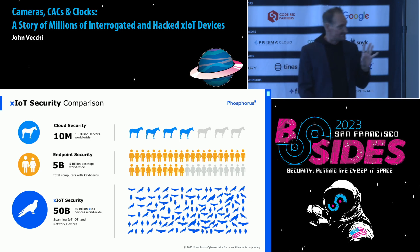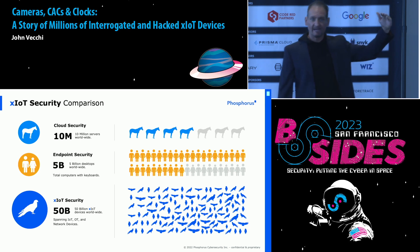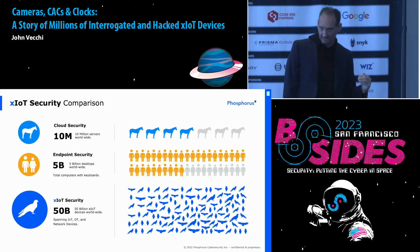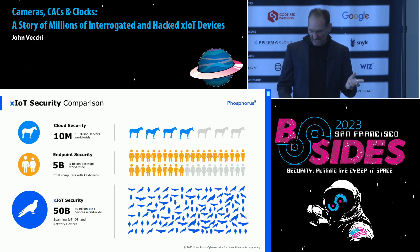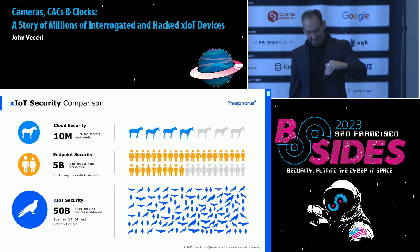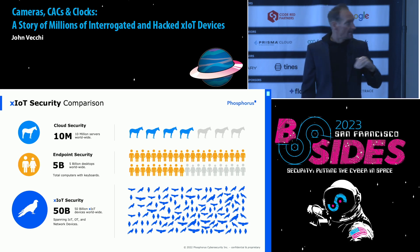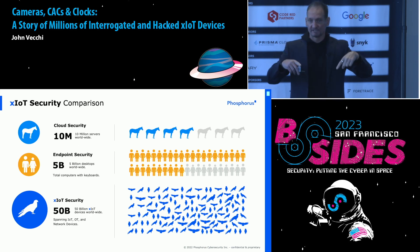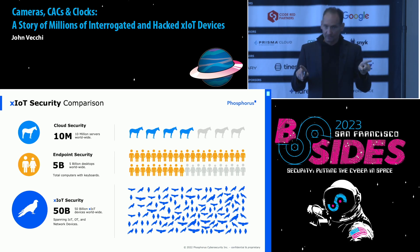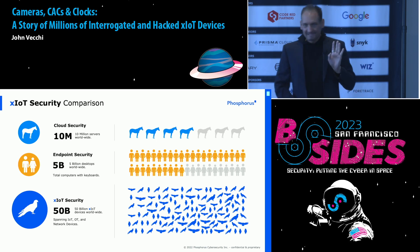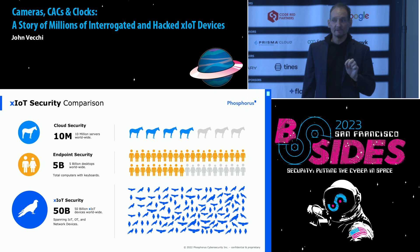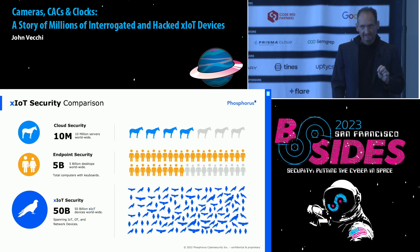There are different ways to look at how big this is. Let's compare cloud security with endpoint security with this. Endpoint security: there are about as many endpoint devices on the planet as there are people — probably five to six billion on any given day — and that number is actually decreasing every year. Cloud security has about 10 million physical servers. But XIoT? Upwards of 60 to 70 billion of these things already, and that's increasing about 18 to 20% every year. These devices are exploding in size — they're everywhere.